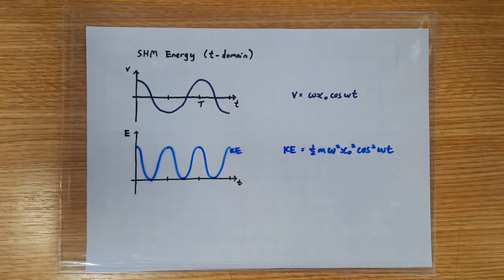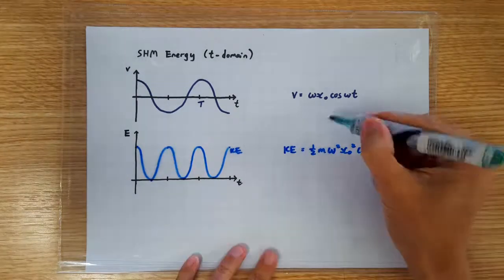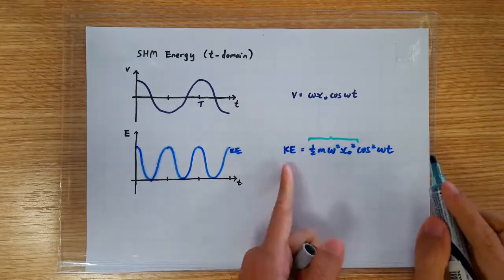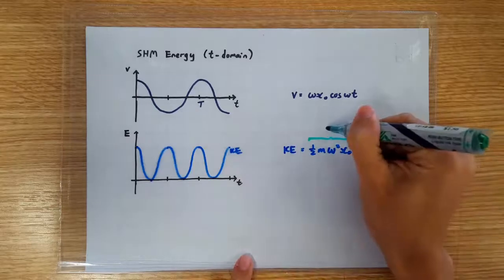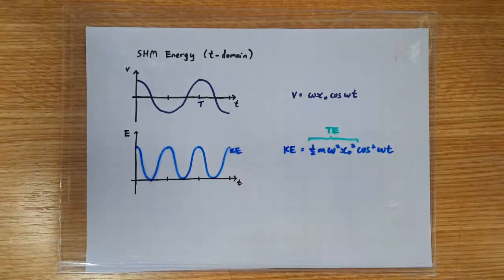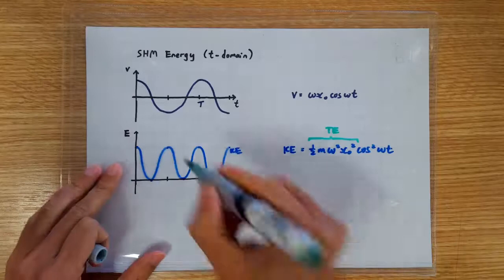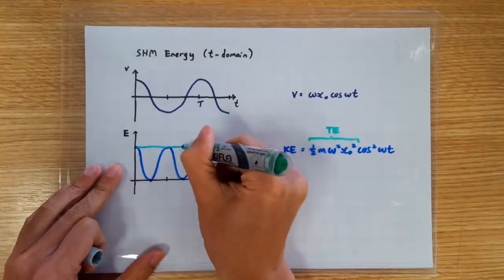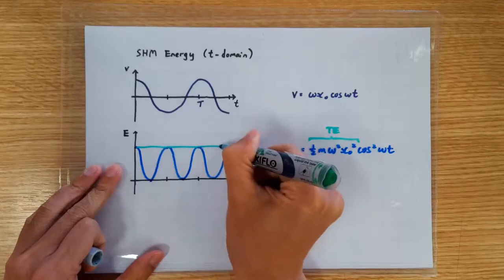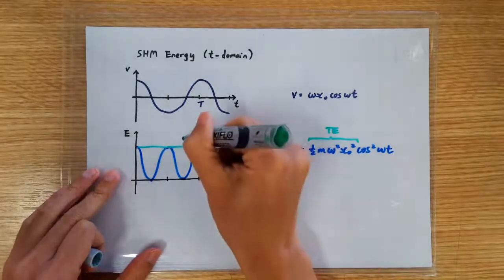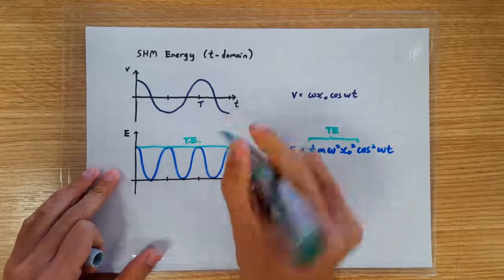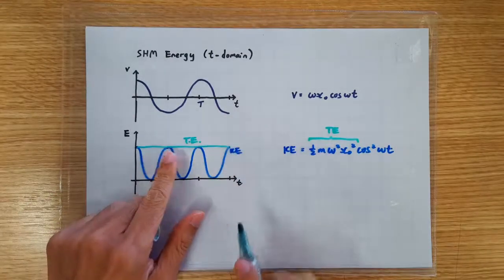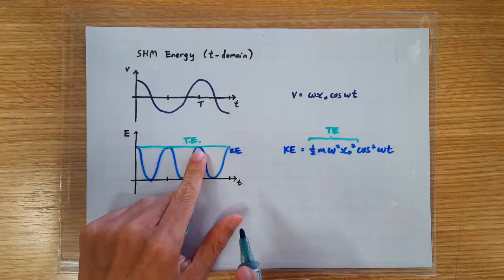Immediately, we recognize that this must correspond to the maximum KE, which is also the total energy of the oscillation. Remember, if it's an undamped oscillation with no loss in energy, then the total energy of the oscillation is a constant.